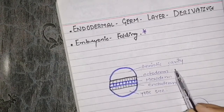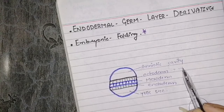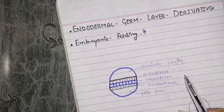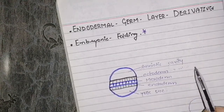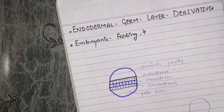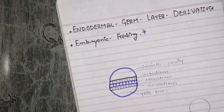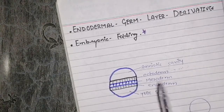Ectoderm mostly deals with things that help us communicate with the outside world. For example, the central nervous system, peripheral nervous system, and also our eyes, ears, nose, and glands — such as sebaceous glands, mammary glands, etc.